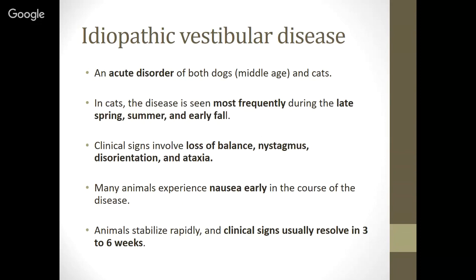Idiopathic vestibular disease — idiopathic meaning we don't know what causes it — is an acute disorder of dogs, usually middle-aged, and cats. In cats the disease is usually seasonal, most frequently seen during late spring, summer, and early fall. Clinical signs involve loss of balance, nystagmus — movement of the eye horizontally without movement of the head — disorientation, and ataxia. Many animals experience nausea early in the course of the disease.